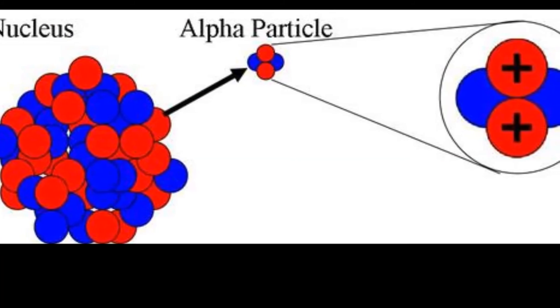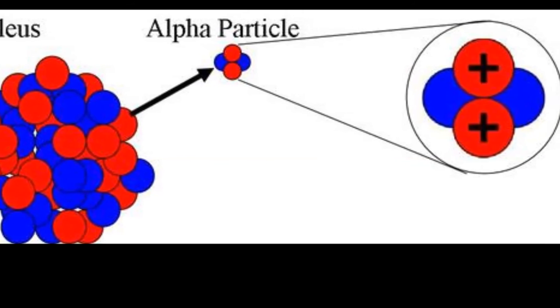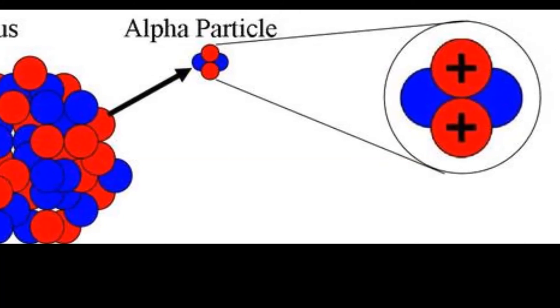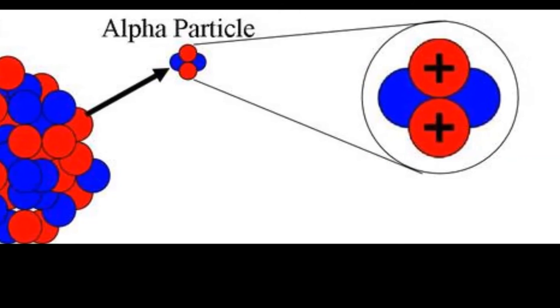Alpha radiation had the weakest penetrating power because it consists of two neutrons and two protons, making it relatively heavy and limited to its penetrating abilities.